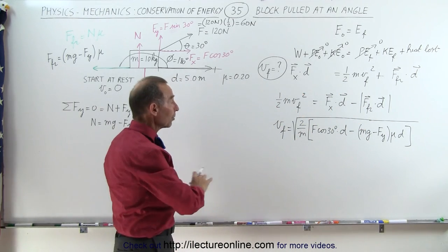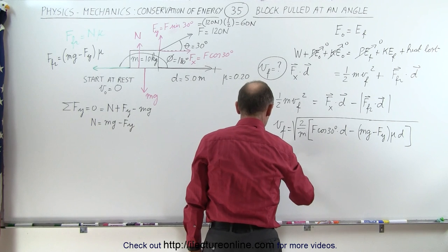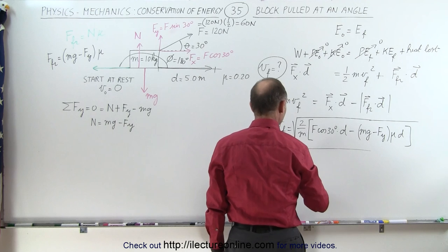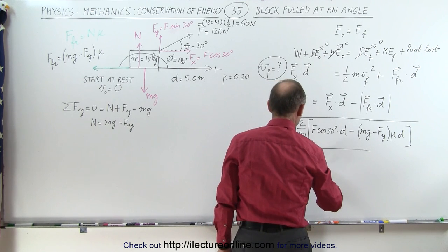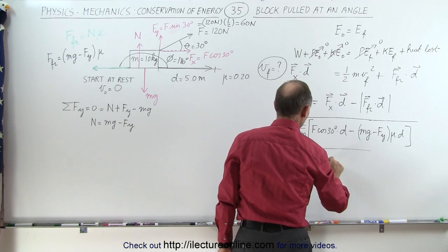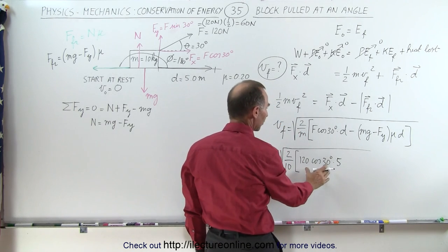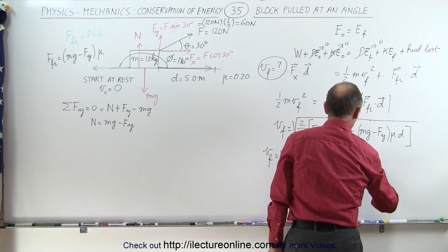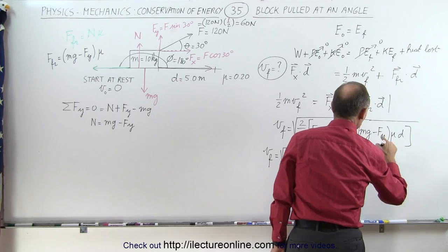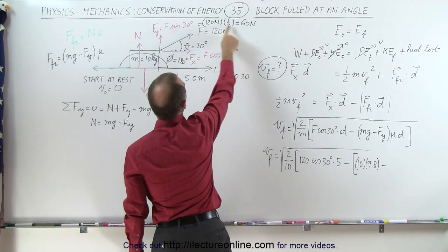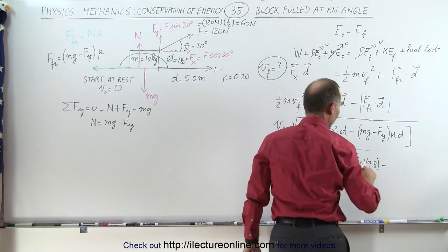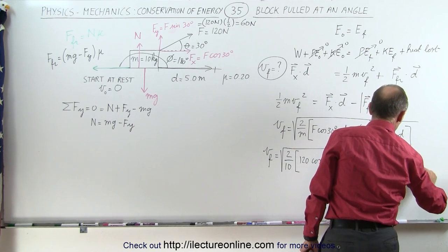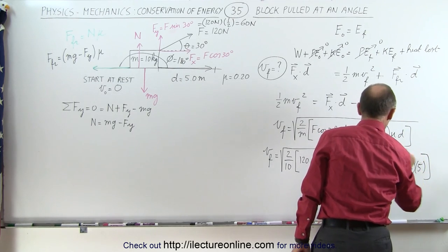Now we're ready to plug in the numbers. V_final equals the square root of 2 divided by 10 (the mass), times 120 times cosine of 30 degrees times 5 — that's the work put into the system — minus mg, which is 10 times 9.8, minus the force in the y direction (60 newtons, half of 120), times 0.2, times the distance of 5. All of that is underneath the radical.